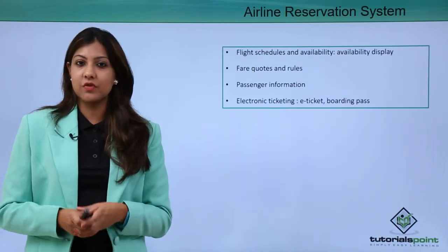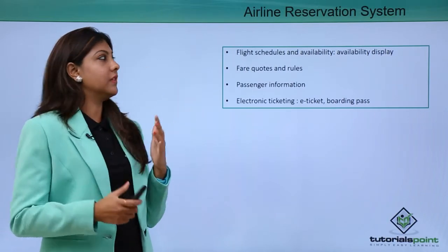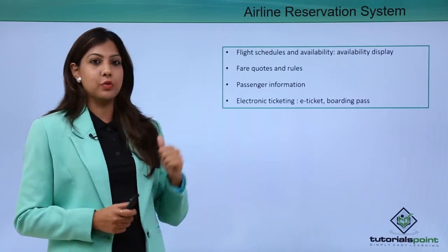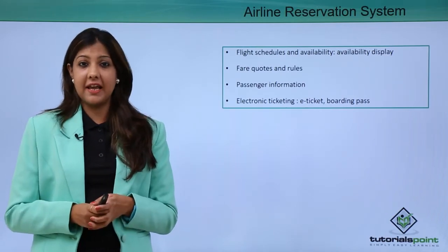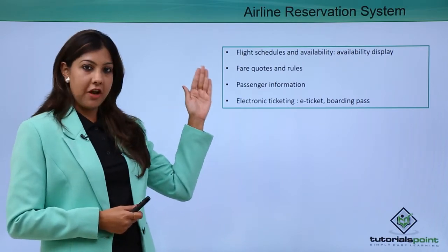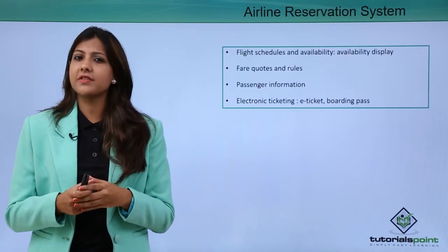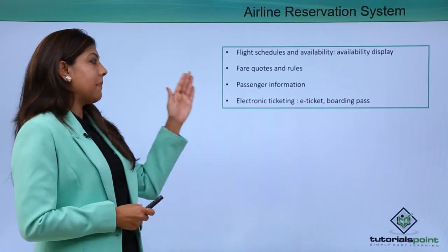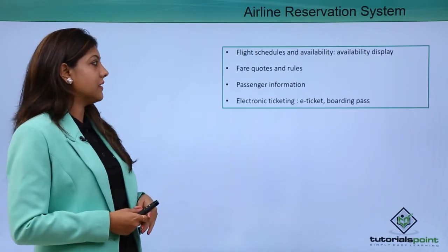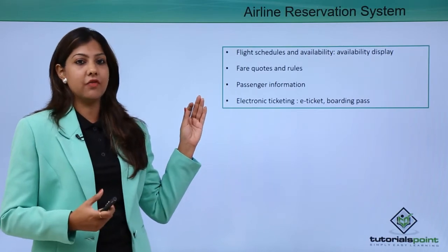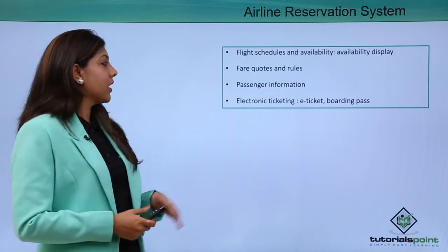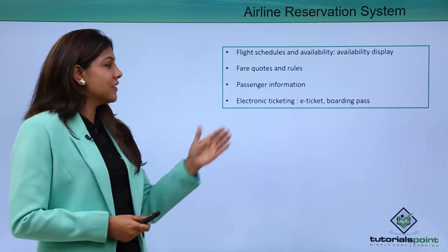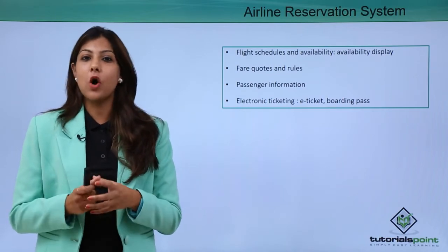The Airline Reservation System (ARS) covers everything related to flight scheduling, availability, dispatching, fare codes, and rules. Fares are decided in advance for each airline and each destination it flies to. Some fares are refundable and some are non-refundable — the airline decides this at a macro level. Passenger information is collected through the reservation system, requiring ID details. Electronic ticketing and e-tickets are now standard, along with online boarding passes, thanks to digitalization.